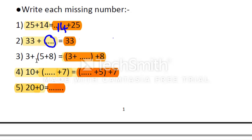Exercise 3: 3 plus 5 plus 8 equals 3 plus what plus 8. We have the same numbers, but we only change the order of the parentheses. So 3 plus 5 plus 8 equals 3 plus 5 plus 8. Don't be confused by the parentheses — we have the same numbers in the same order.